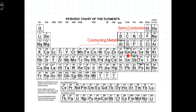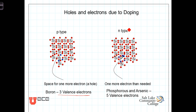Looking back at the periodic table, boron falls in the column just to the left of the semiconductor column and has only three valence electrons. On the other hand, phosphorus and arsenic fall in the column just to the right of the semiconductor column and have five valence electrons. Those in that column represent the N-type dopants, and those in the adjacent column represent the P-type dopants. The manufacturing process of making semiconductor devices, such as transistors and diodes, is to create areas within the silicon substrate that have either P-type or N-type dopants replacing silicon atoms.